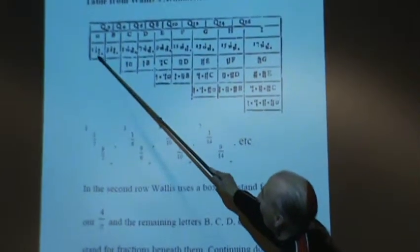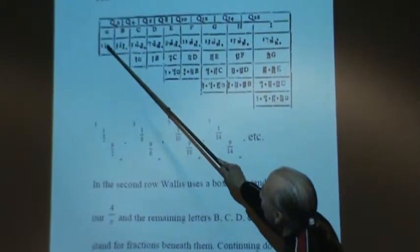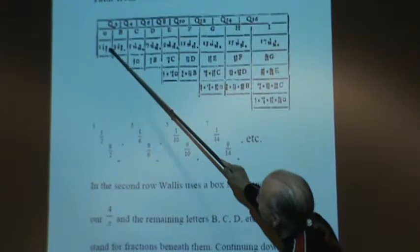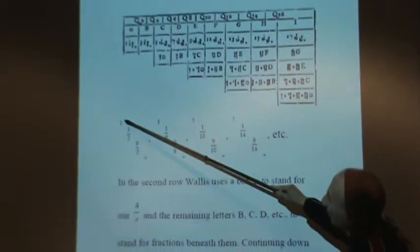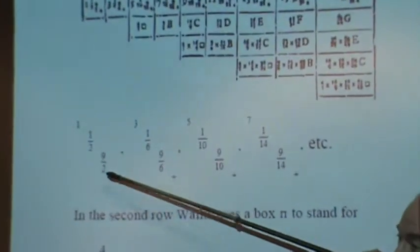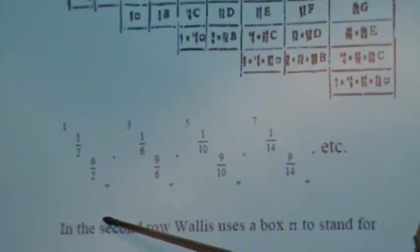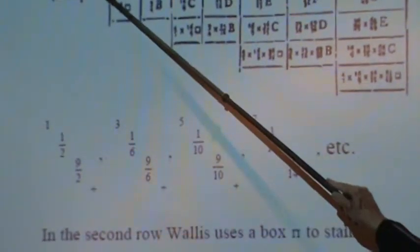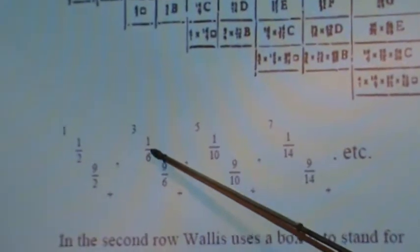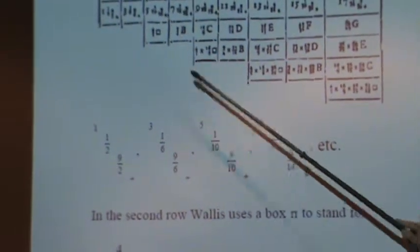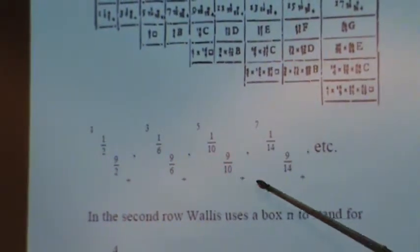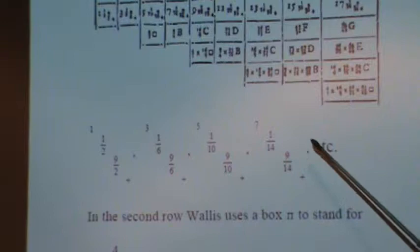Now here are the continued fractions. It's hard to see it. I'm trying to expand it here, and he's written that as one, one-half, nine-halves, plus - that's the first one. And here's the second one: three, one-sixth, nine-sixth, and so on. Here, five, one-tenth, nine-tenths. He's written them in.